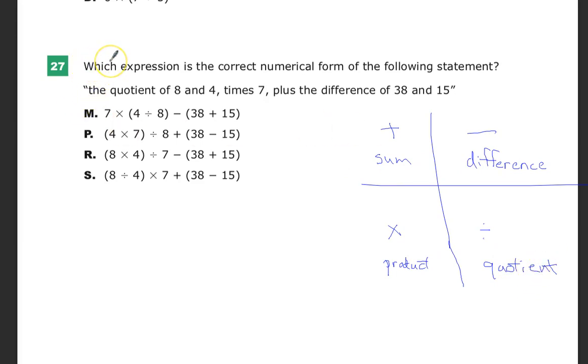So it says, which expression is the correct numerical form of the following statement? And we're going to go left to right, unless it says otherwise. Write it as you read it. So the quotient of 8 and 4 times, oh, they didn't even use the fancy math word for that one, plus the difference of 38 and 15.